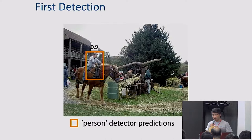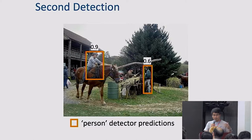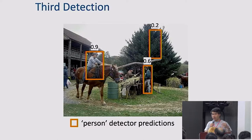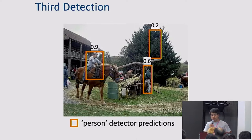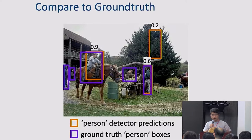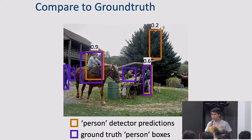The confidence score indicates how likely the detector thinks a region corresponds to a person. You run it and get the first detection, the second detection, and so on. You can rank the detections based on their score — the one with the highest score is first, the next has a lower score but is still a person, and a third one with even lower score might not correspond to a person at all.